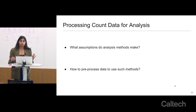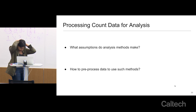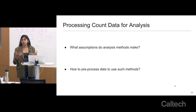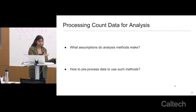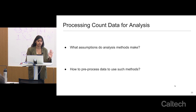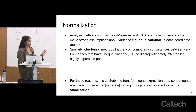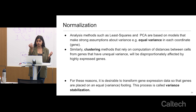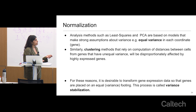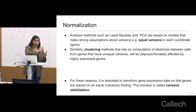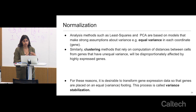Given what we've talked about — regression, logistic regression, and their assumptions — when we analyze these data, we need to ask which assumptions actually make sense and how to process the data to make those methods work. There are many reasons to normalize and adjust count data. One is that many methods assume equal variance. Just because something has a higher value doesn't make it more variable in the way we care about, but clustering methods using Euclidean distance also assume equal variance, and this breaks if highly expressed genes inherently have higher variance.